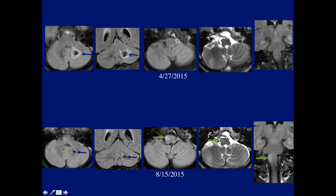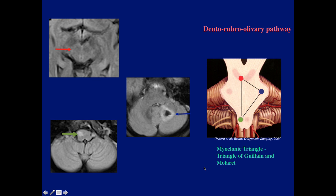As you can see, the dentate is abnormal on FLAIR and T2 images. Again, this case shows the typical findings of the myoclonic triangle: involvement of the dentate, maybe the red nucleus shows a little more signal than the opposite side, and the olivary changes.